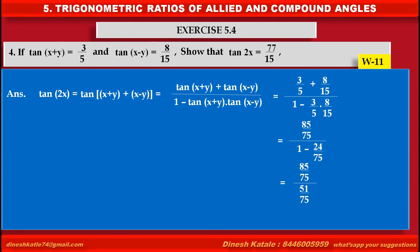Dividing by the common denominator 75, we get 85 upon 51, which simplifies to 77/15.